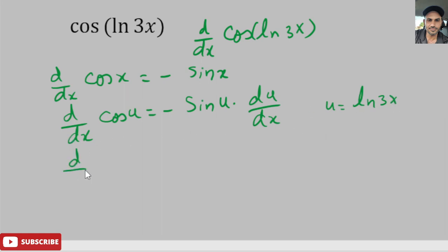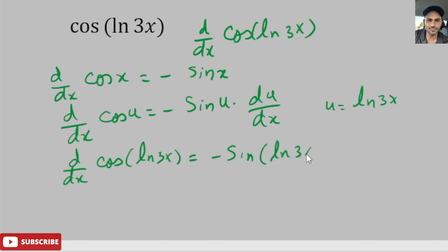Now I'll plug this into the chain rule. So d/dx of cosine of ln of 3x equals negative sine of ln of 3x, times the derivative of u, which is d/dx of ln of 3x. All I did was substitute this function into the chain rule formula.